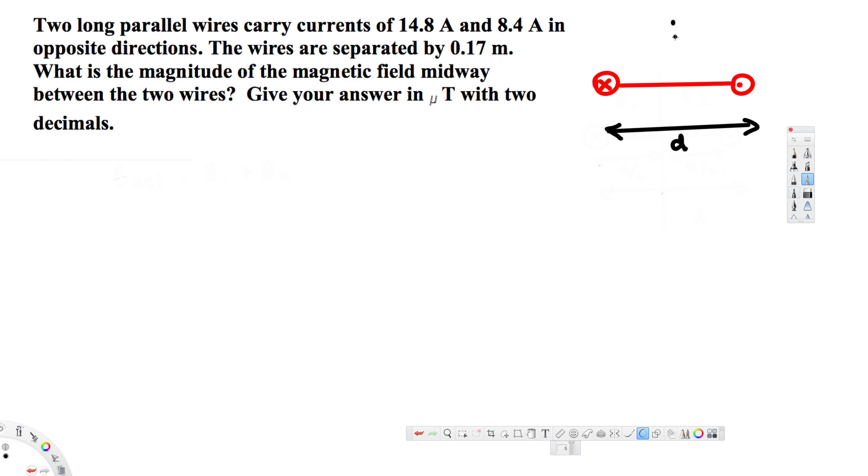If this distance is d, then midway, let's say this is our midway. In midway the distance is going to be d divided by 2. Also here we are going to have d divided by 2. And here let's say this is magnetic field 1, so let's call this one B1.